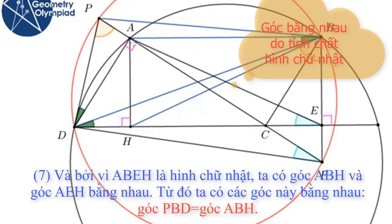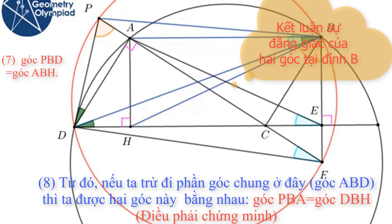Because ABEH is a rectangle, I know that angle ABH is equal to angle AEH. So these two angles are equal. If I subtract the common angle between them, I will have two equal angles — these two angles. Therefore angle PBA equals angle DBH, and the problem is proven.